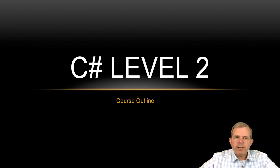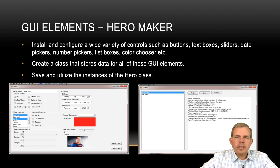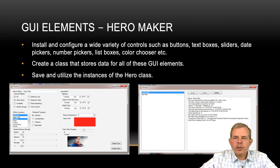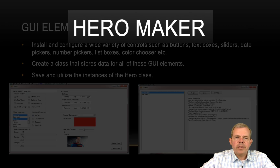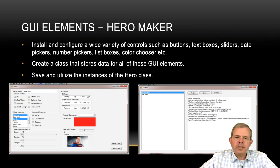Welcome to the next unit for our C Sharp Level 2 course. In this section, you're going to build an application called Hero Maker, and the point of Hero Maker is to demonstrate all of the different types of controls that you find on common Windows applications.